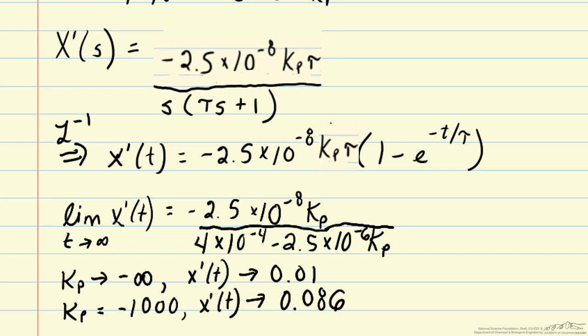This problem of steady state error is often a problem with proportional control. So if we want to achieve zero steady state error, we may need to add an additional term to our control law, such as an integral term.